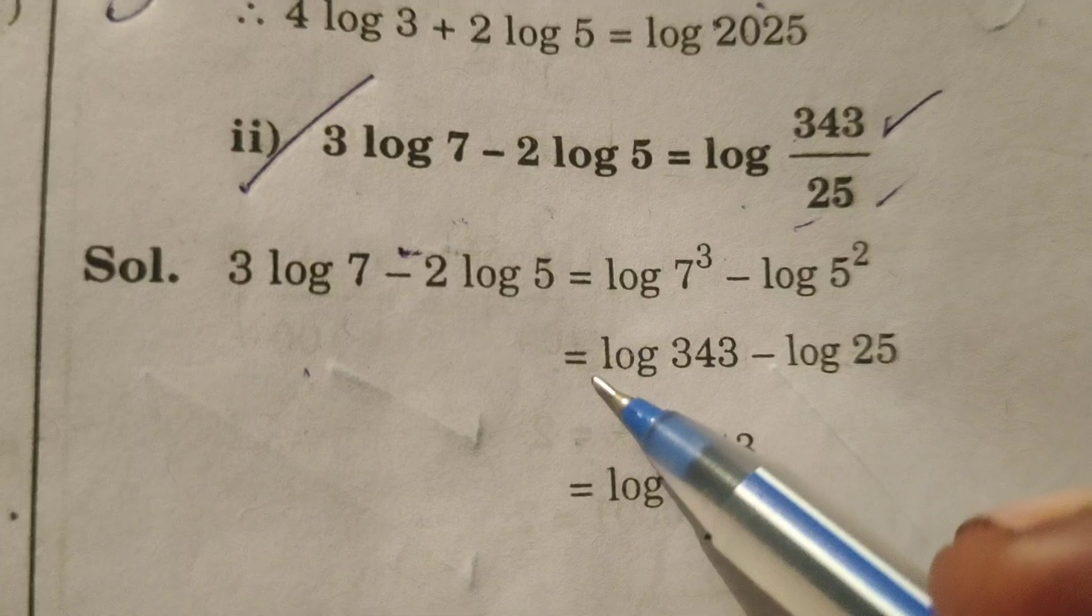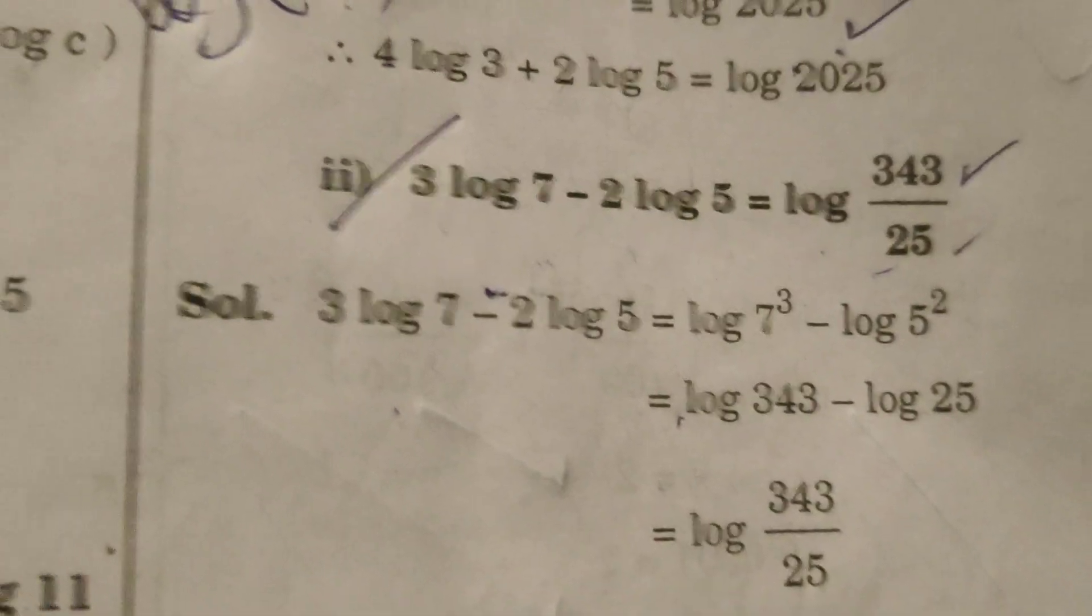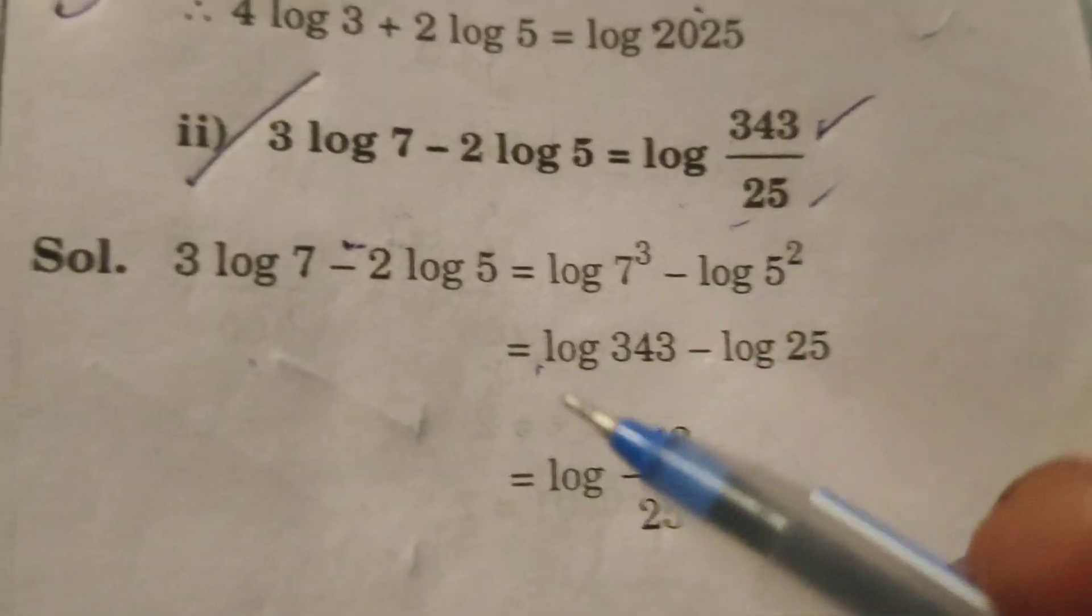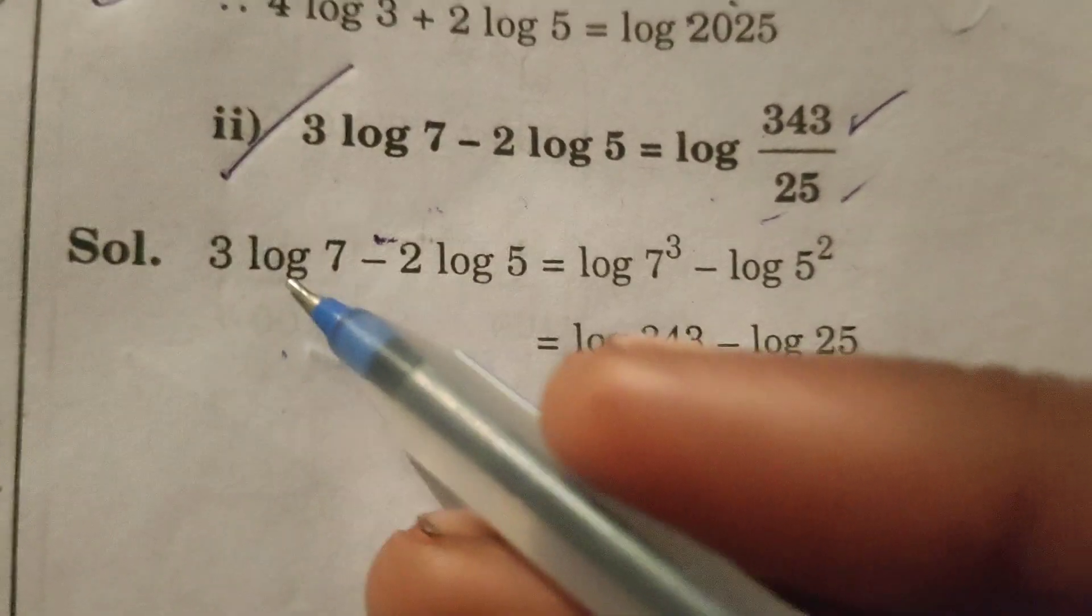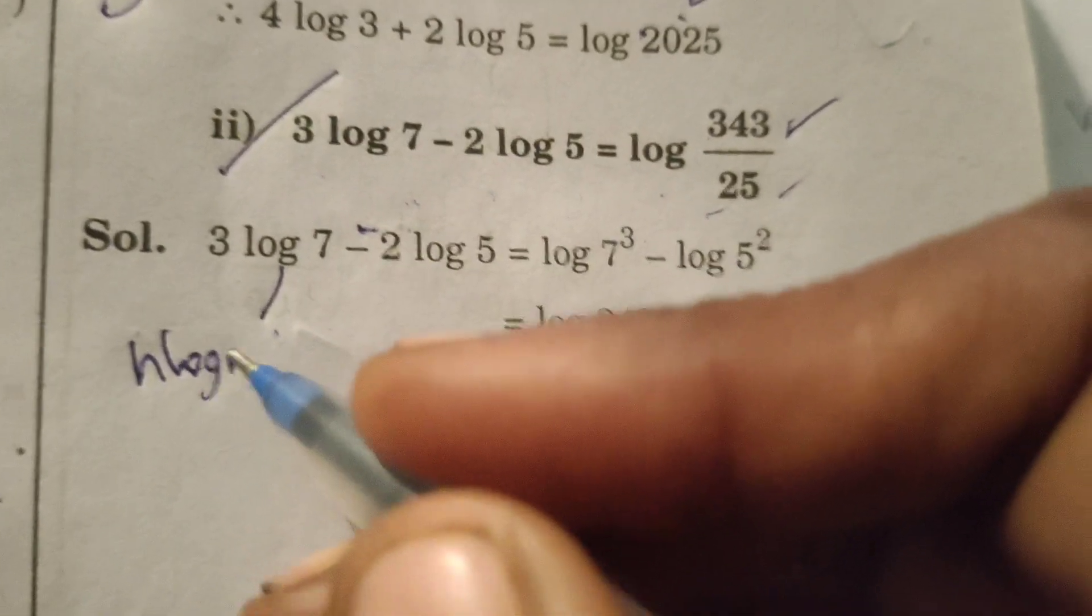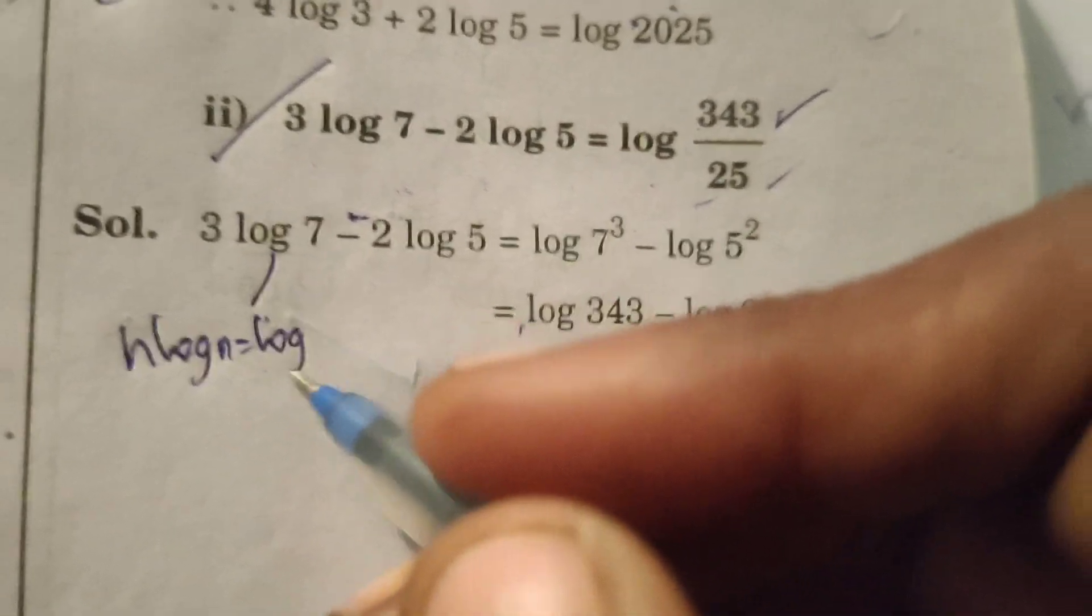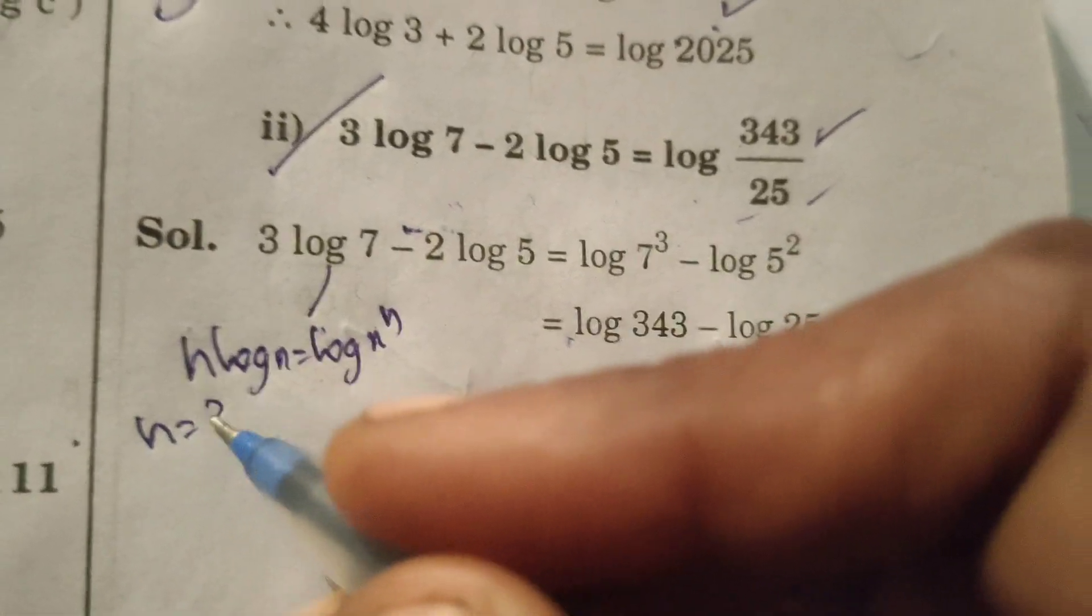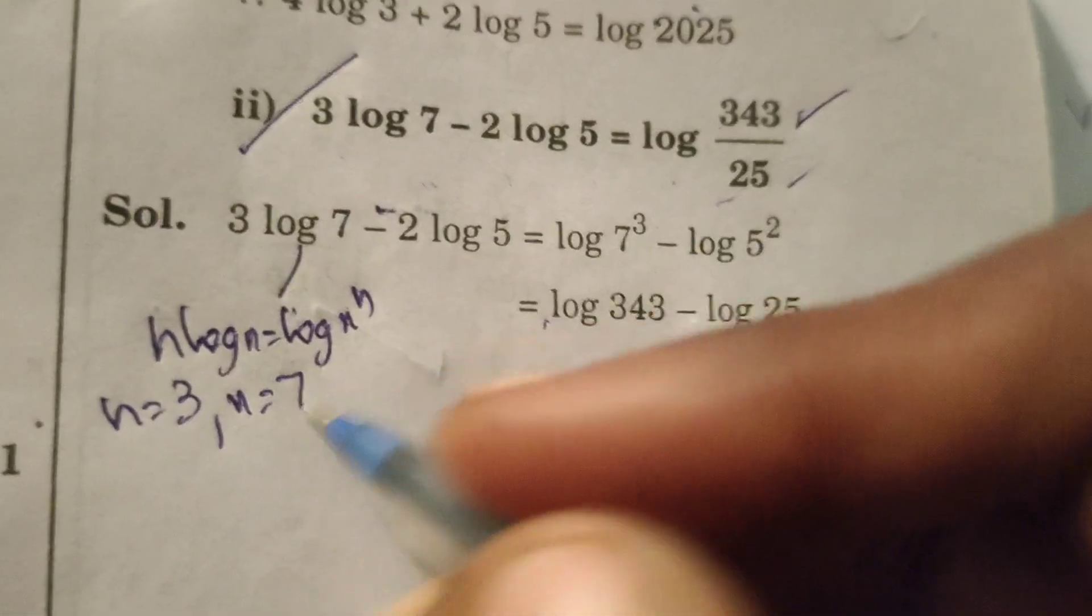First of all, write given LHS here. Now here applying the formula n log x, that is log x power n. Here n means 3, x means 7.